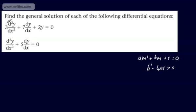So what we're going to do, we're going to apply it here. We've got 3d²y/dx² plus 7dy/dx plus 2y is equal to zero. So writing the auxiliary equation, we can write 3m squared plus 7m plus 2 is equal to zero.